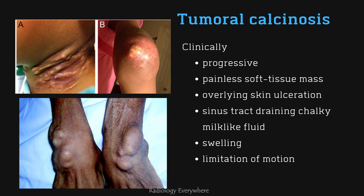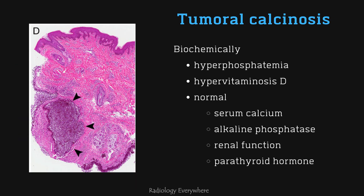Clinically, there are progressive painless soft tissue masses with overlying skin ulceration and sinus tract draining chalky milk-like fluid. You can see swelling and limitation of motion, hyperphosphatemia, and hypervitaminosis D. You can also see normal serum calcium, alkaline phosphatase, renal function, and parathyroid hormone levels.